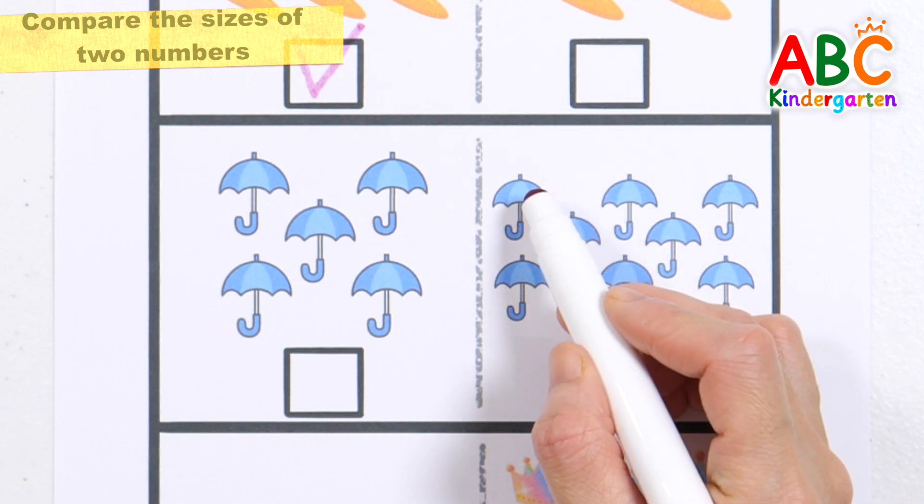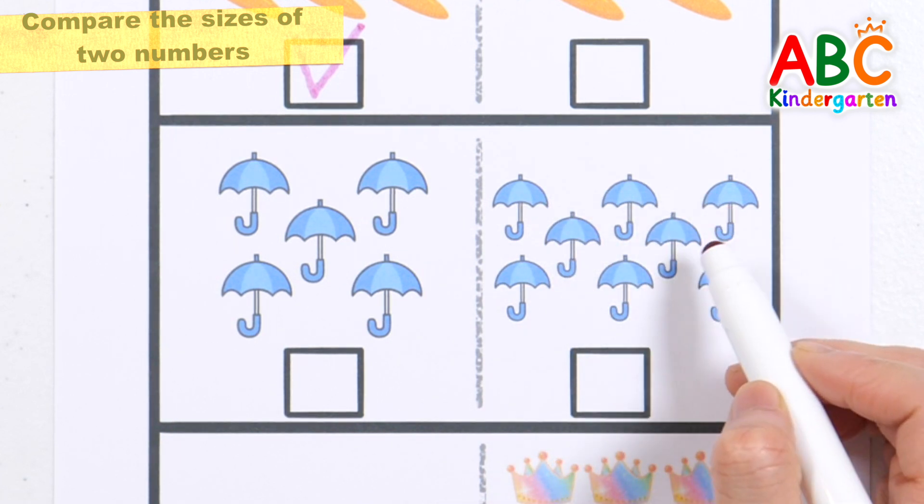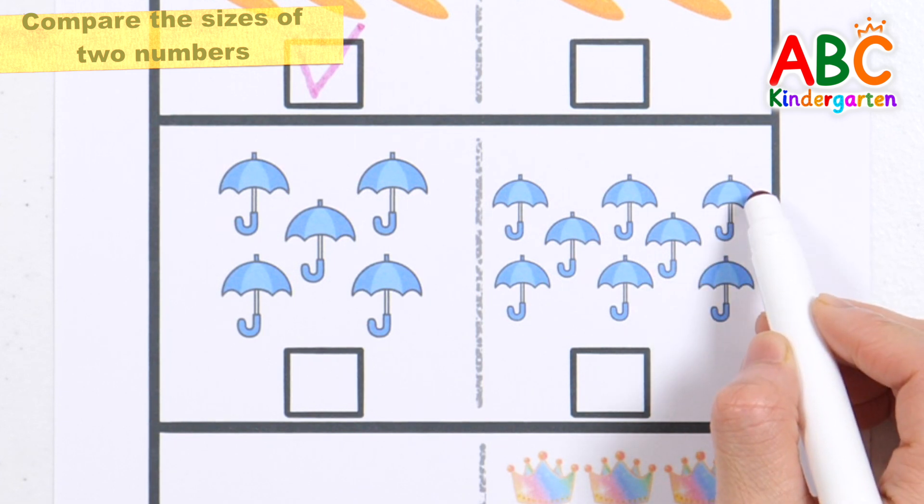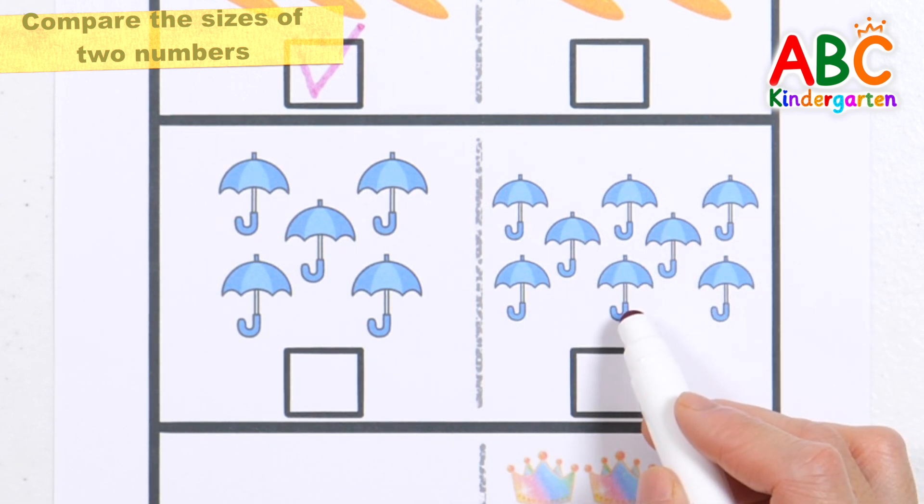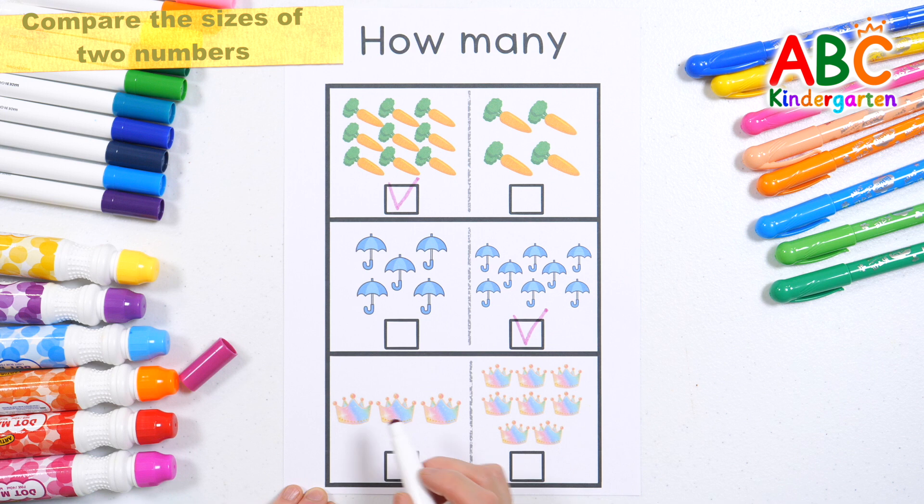One, two, three, four, five, six, seven, eight. Eight umbrellas! Find the one with more numbers! That's right! Good job!